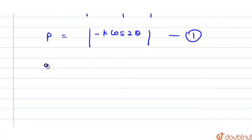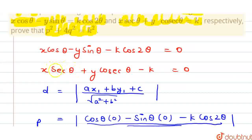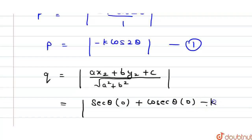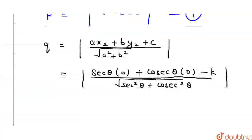Now let us write q using this formula. q equals ax₂ plus by₂ plus c divided by the square root of a² plus b². Substituting the second equation: a is sec θ, b is cos θ, and c is minus k. The point is the same origin, so substituting 0. This equals q.